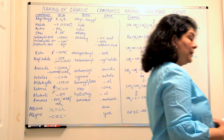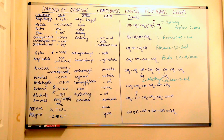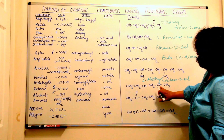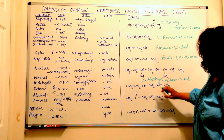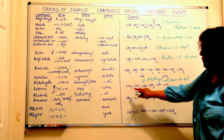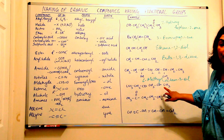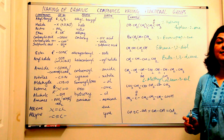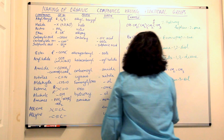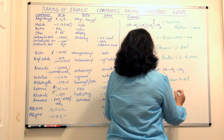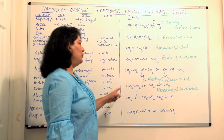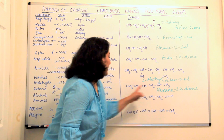The next compound has two keto groups (C=O, C=O). Counting from the side that gives lower locants: one, two, three, four, five, six — it is hexane. The two keto groups are at the second and fourth carbons, and with two ketones we use 'dione.' The name is hexane-2,4-dione.